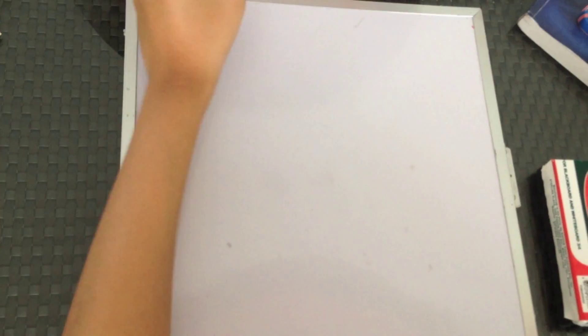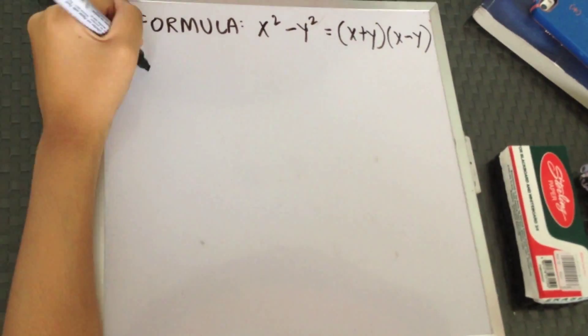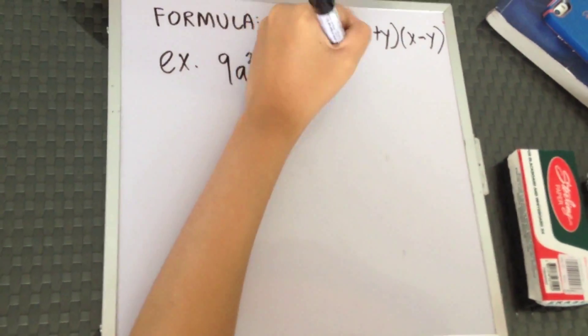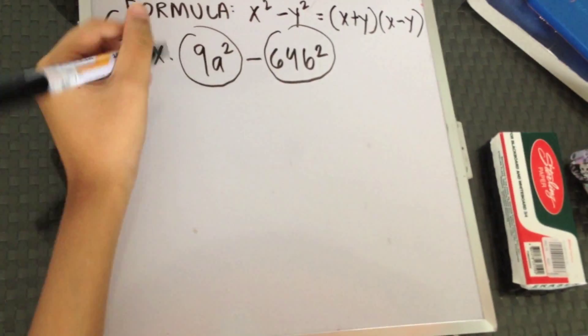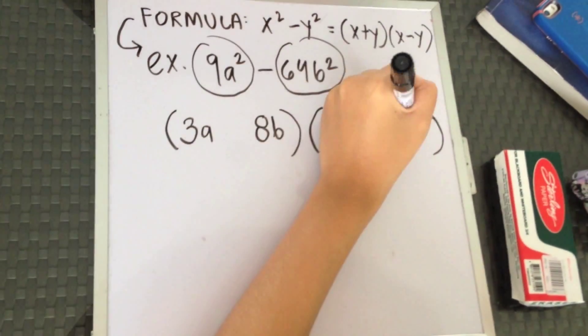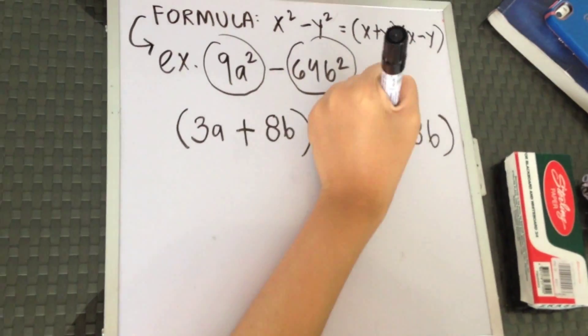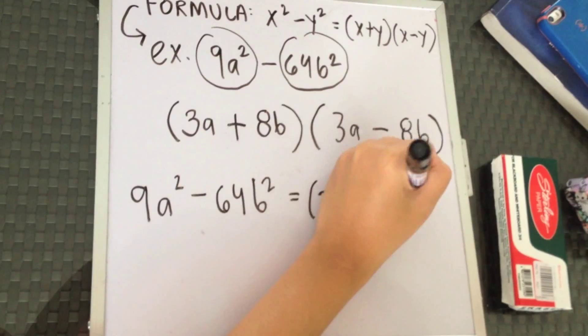Difference of two squares. The formula is x squared minus y squared equals x plus y times x minus y. Apply the formula. The square root of 9a squared is 3a and the square root of 64b is 8b. Then apply the plus and minus sign to the square roots. This is your final answer.